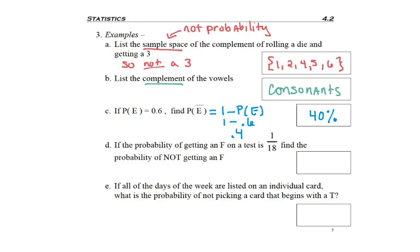Now problem 3d: what is the probability of getting an F on a test? It says it's 1/18, but we want to find the probability of not getting an F. In this case it doesn't ask for complement, but the word 'not' implies complement. So you may just know if one out of 18 people are getting an F, how many people aren't, but there's also a mathematical way to get it. If I was doing the complement formula, 1 minus 1/18.